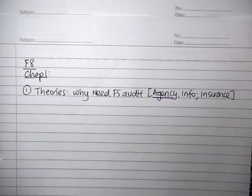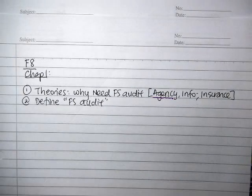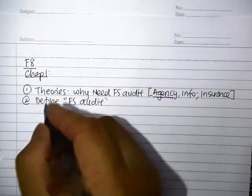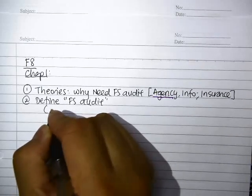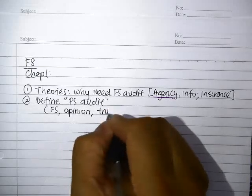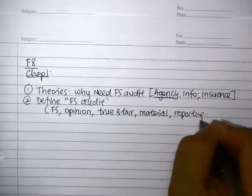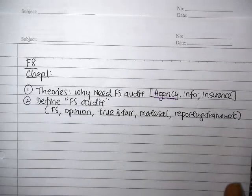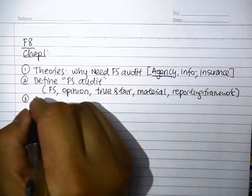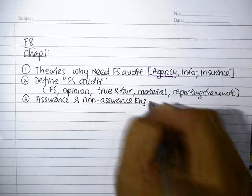By going through the theories behind auditing, we actually define the meaning of the word 'financial statement audit.' When we go through that meaning, we discuss a few key jargon: what do you mean by 'financial statement,' the word 'opinion,' what is 'true and fair,' what is 'material,' and the meaning of 'reporting framework.' These are the key concepts discussed in class, and then we moved on to look at the meaning of assurance and non-assurance engagement.